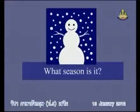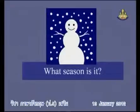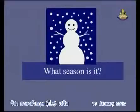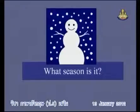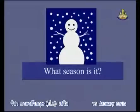Now we are talking about seasons in Western countries. How many seasons are there in Western countries? You know, there are four seasons in Western countries. What are they? The four seasons are winter, spring, summer, and autumn or fall. Now students, take a look at this picture and answer: what season is it?